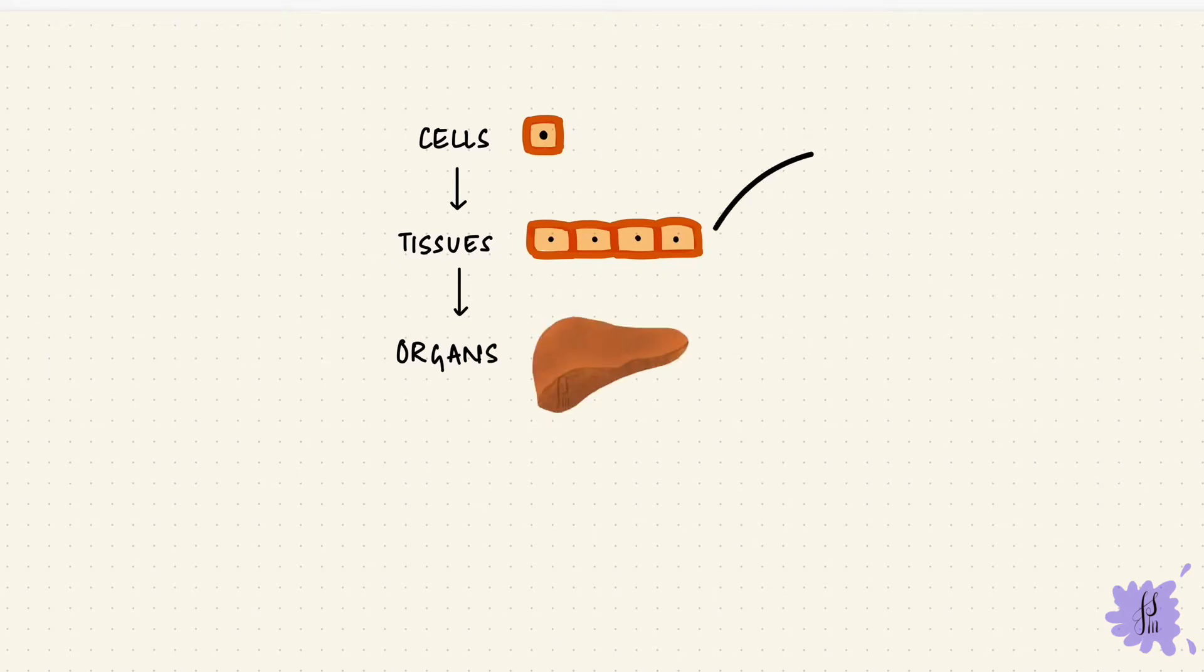There are different kinds of tissues in the human body. There's epithelial tissue, connective tissue, muscular tissue, and nervous tissue.